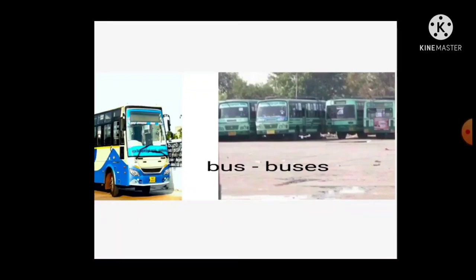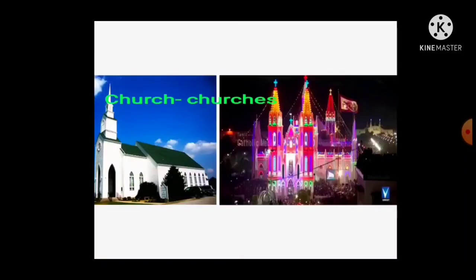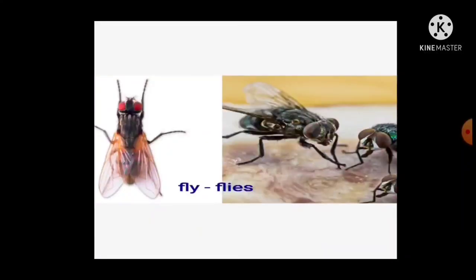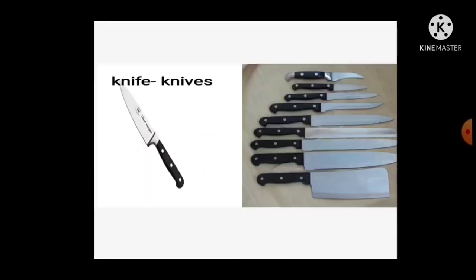Rule two: add ES. With the noun we add ES. Bus — buses; church — churches. Sometimes we change Y into IES for plural when Y comes before a consonant, not a vowel. Baby — babies (Y cut, put IES). Fly — flies (Y cut, put IES).